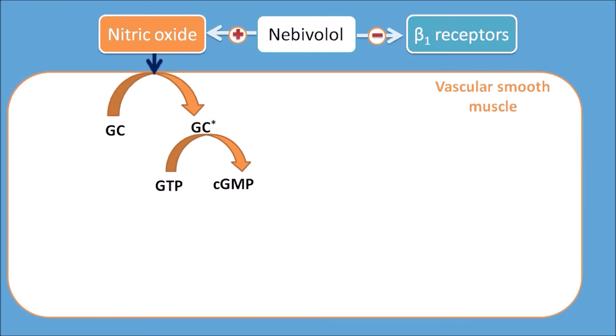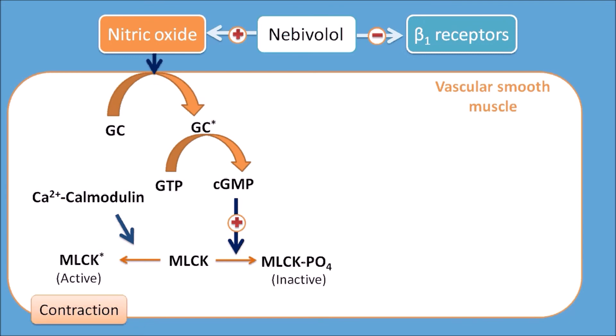Now this cyclic GMP can convert the MLCK (myosin light chain kinase) into the myosin light chain kinase phosphate, which is an inactive form. Actually, MLCK is activated to MLCK active form by calcium-calmodulin complex. So this complex is required for the activation of MLCK, thereby contraction of the vascular smooth muscle.